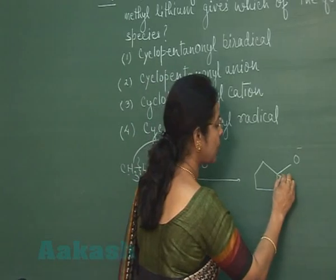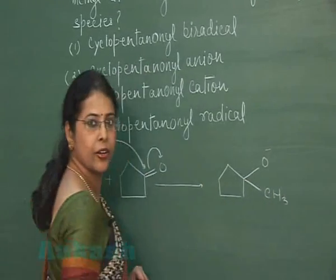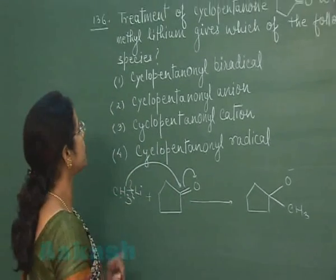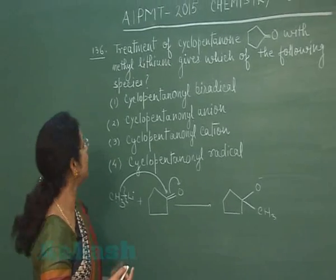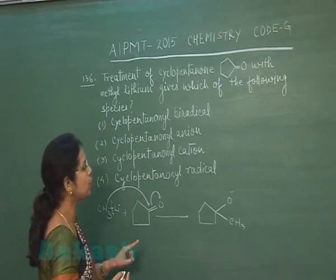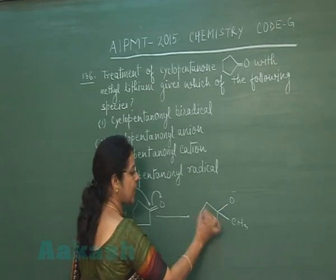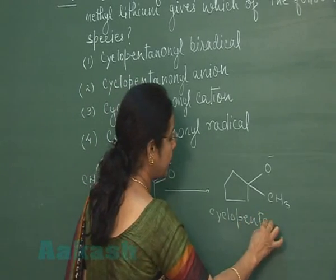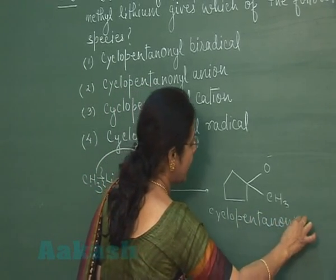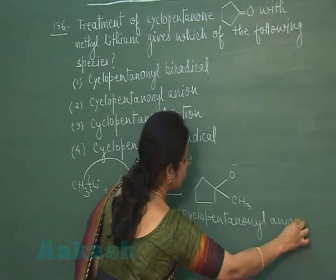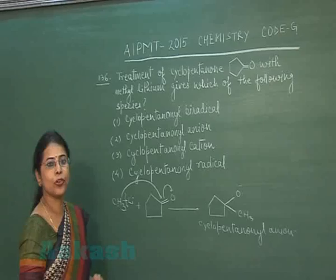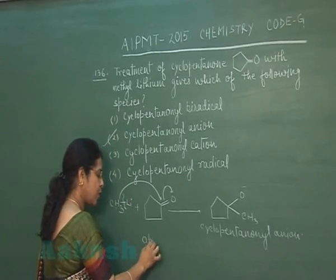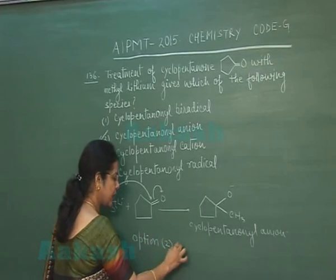Carbon being more electronegative acquires negative charge and the methyl group will attack at the carbonyl carbon atom. The intermediate formed in this reaction is an anion. The name of this reaction intermediate is cyclopentanoneyl anion, which is the correct answer — option 2. This reaction is an example of nucleophilic addition reaction.